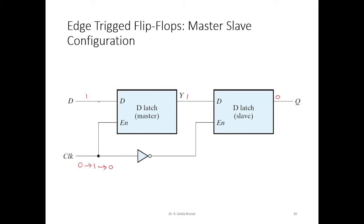that will not be affecting the master D latch. And since clock has become 0, this slave flip-flop will be enabled and this input Y is accepted by the slave and this will get reflected in the output Q.